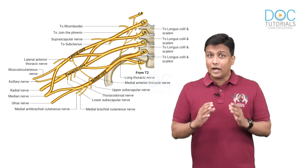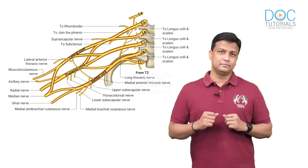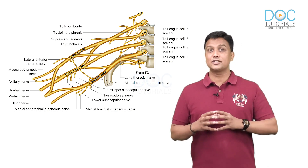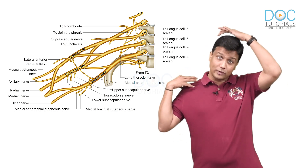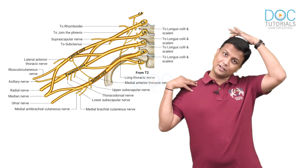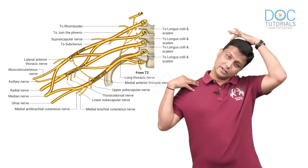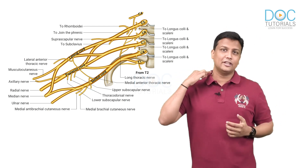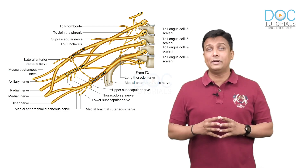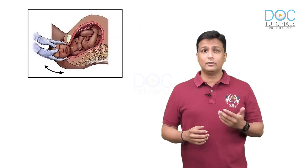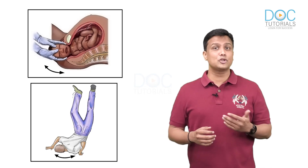How will Erb's Paralysis occur? It is due to an overstretch between the head and the shoulder. If there is an overstretch between the head and the shoulder, the upper trunk will be damaged. This usually happens during birth injuries and also when a person falls on a shoulder.